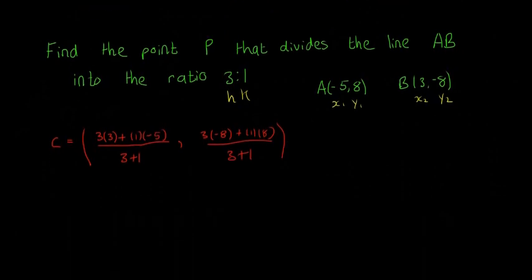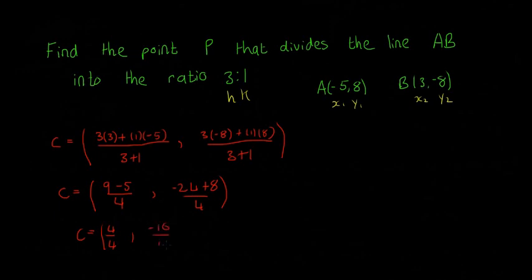Scroll down a little bit more. That means C is equal to 9 minus 5 divided by 4, and we're going to have minus 24 plus 8 divided by 4. C is equal to 4 over 4, and this is going to be minus 16 over 4. So this implies that C is going to be 1 minus 4.